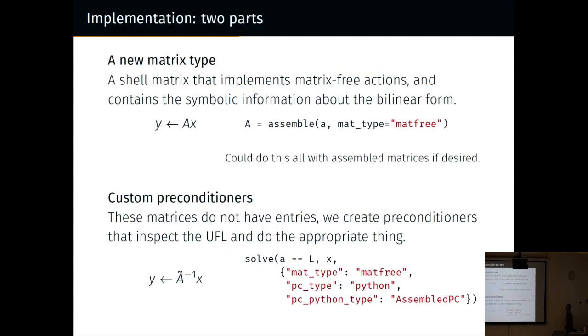There are two bits. There's a shell matrix that implements matrix-free actions but remembers where it came from in terms of the PDE. You could do all this with assembled matrices if you desired, but you'd have to still have this symbolic stuff. Then I have to write custom preconditioners because the matrices don't have entries, but I have symbolic information so I can do things. Here's a very simple thing: I'm going to solve A equals B for X, I'll do matrix-free actions, and my preconditioner I'll just assemble the matrix.